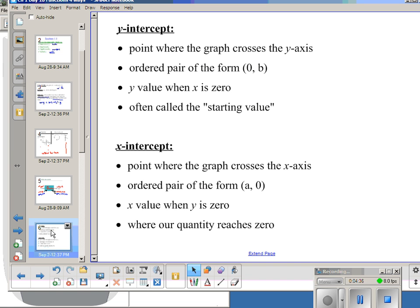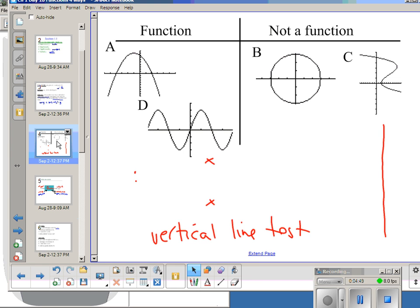A couple other terms we're going to talk about are y-intercept and x-intercept. A y-intercept is a point where the graph crosses the y-axis. So if we think back to one of these, our y-intercepts—here's the y-axis. Here is a y-intercept. This one has two y-intercepts, and this one has one y-intercept right up there.